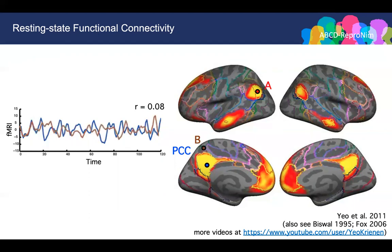On the other hand, if we place a seed at region B and compare the time course of PCC with the time course of region B shown in green, we see that they are not correlated, despite region B being especially close to PCC. In this case, the Pearson correlation is around 0.1. We call this correlation between functional MRI time courses resting-state functional connectivity, and this approach is called seed-based functional connectivity.